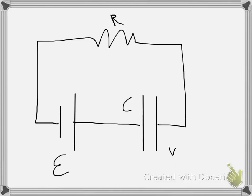I have here a simple RC circuit. You have a battery with some EMF script E, connected to a capacitor with some capacitance C, some potential difference across the capacitor V, and some resistor R.